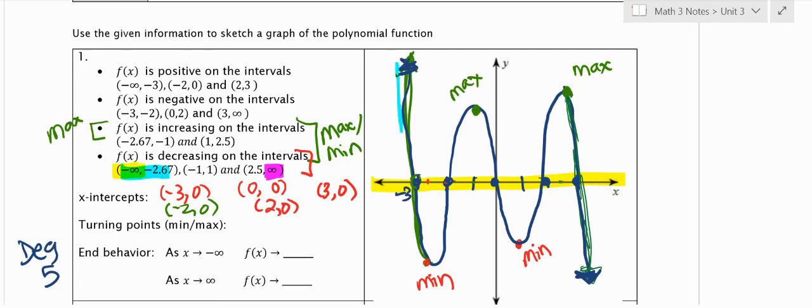So negative infinity to 2.67, it's decreasing. Negative 1 to 1, it's decreasing. 2.5 to infinity, it's decreasing. And then I can see it's increasing from negative 2.67 to negative 1 and increasing from 1 to 2.5.